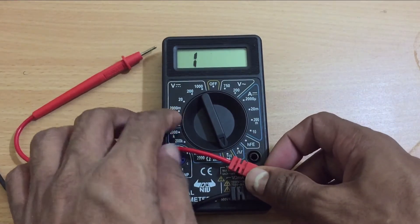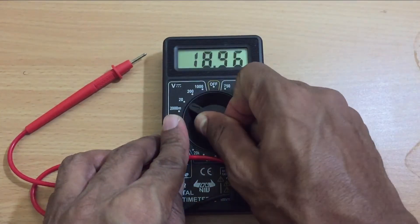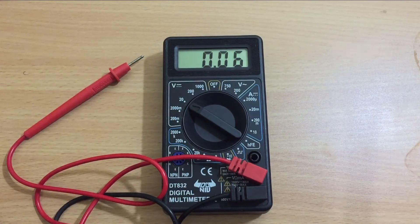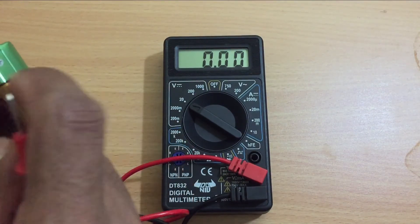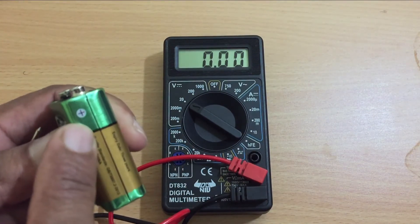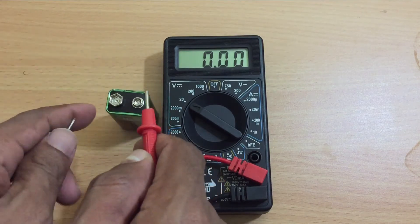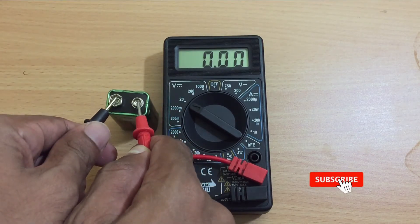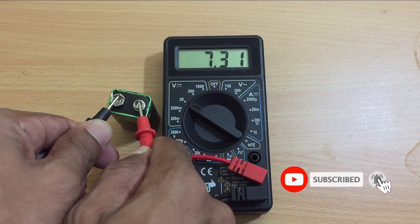Turn the multimeter selection switch to the voltage checking mode. Now we can check the battery voltage of the old battery. Red wire to positive of the battery and black wire to negative pin. You can see the battery voltage has been dropped to 7.31V. The original voltage should be 9V.